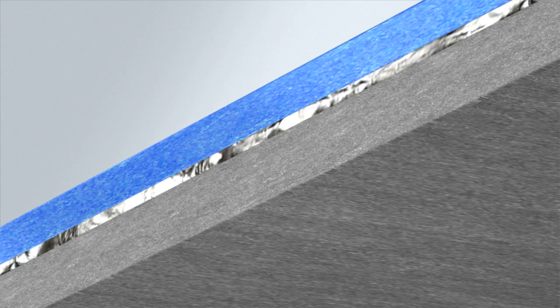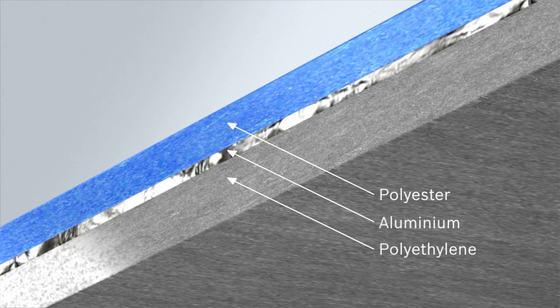The foils are normally composed of three layers. The outside is a mechanically stable polyester layer. The middle layer is comprised of aluminium and the inside layer is made of a sealable material, for example polyethylene.